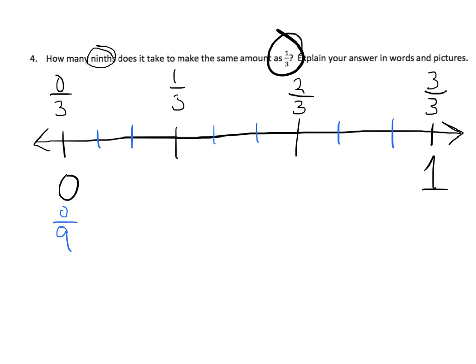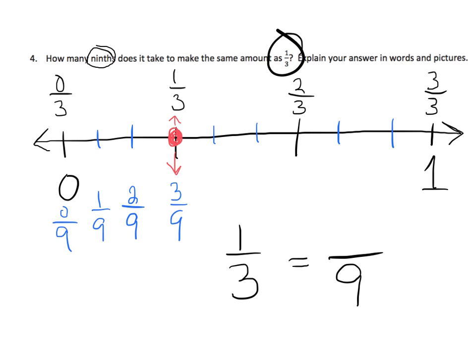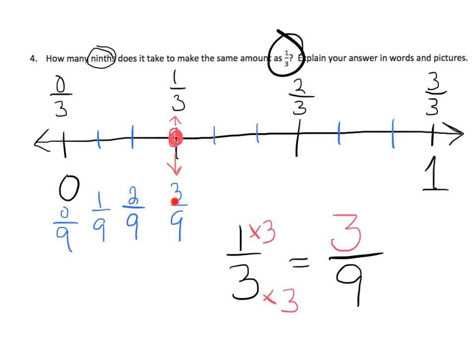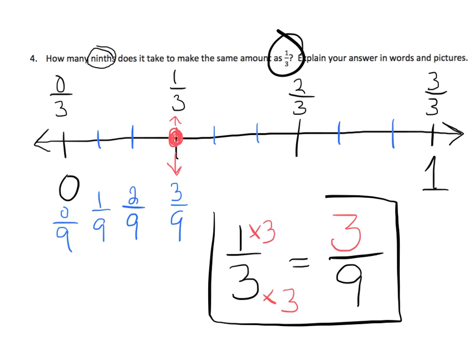Because three times three is nine. So this becomes zero-ninths, one-ninth, two-ninths, three-ninths. And that's the answer to our question: how many ninths does it take to equal one-third? There's one-third and there's one-ninth — the answer is three-ninths. We can write this out: one-third equals how many ninths? We can see three times three is nine, so one times three is three. We know we're right by using the picture and by seeing this relationship.